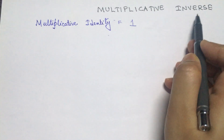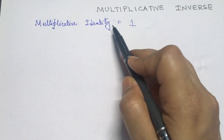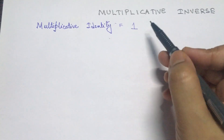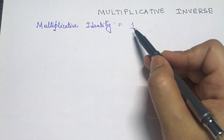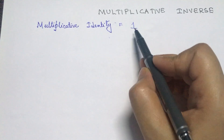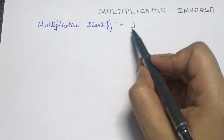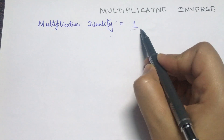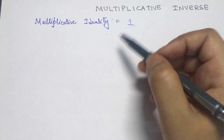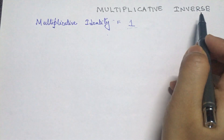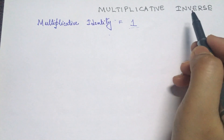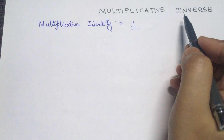Multiplicative inverse of a field element is another element belonging to the same Galois field such that the product of those two elements gives us the multiplicative identity. We are going to find the multiplicative inverse only for the non-zero elements.